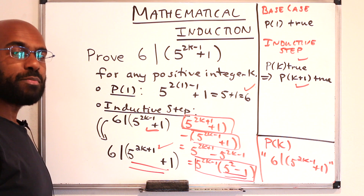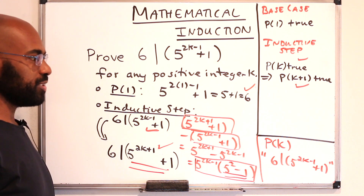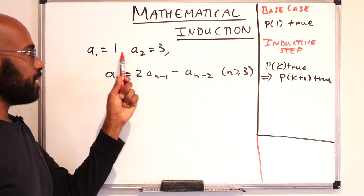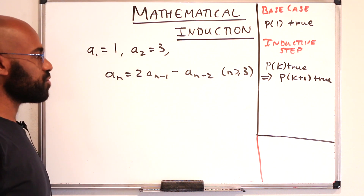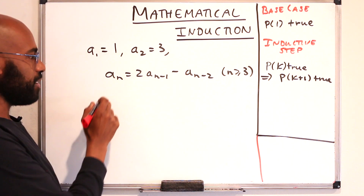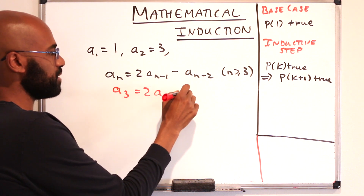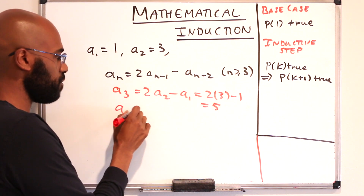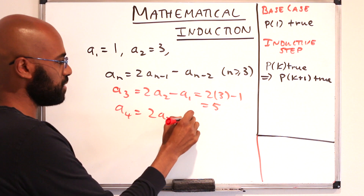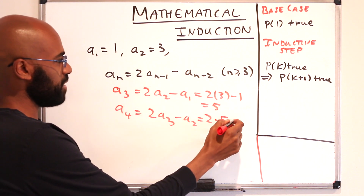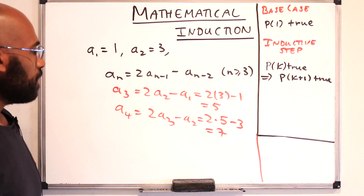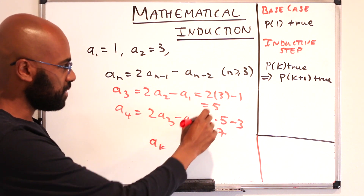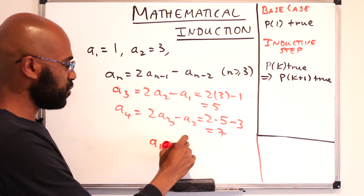Let's look at one more example to see how complications can arise if we try to use induction the way we've stated it so far. In this next problem, we're going to define a sequence starting with a1 equals 1, a2 equals 3, and then recursively defined as follows: any term is twice the previous term minus the term before that. So a3 is twice a2 minus a1, which is 2 times 3 minus 1, giving us 5. And a4 is twice a3 minus a2, so that's twice 5 minus 3, which is 7. The pattern looks like 1, 3, 5, 7 — in general, a sub k seems to be the kth odd number, which is 2k minus 1.